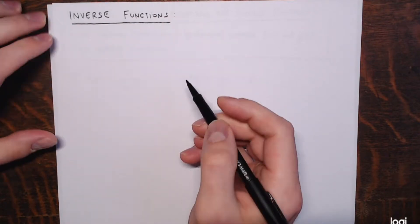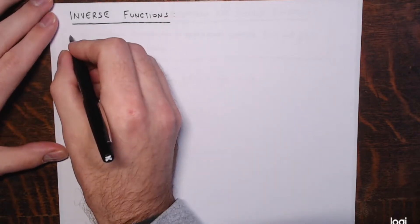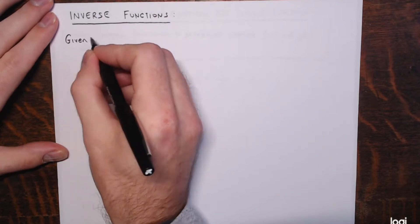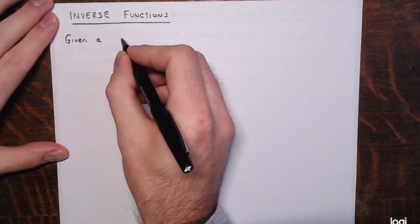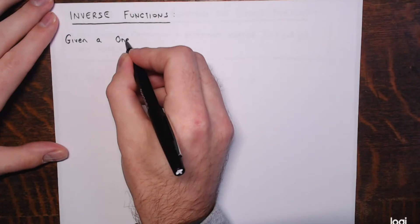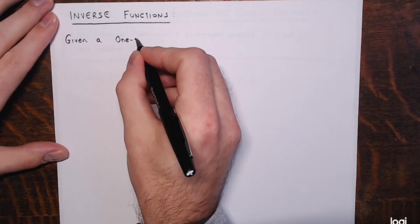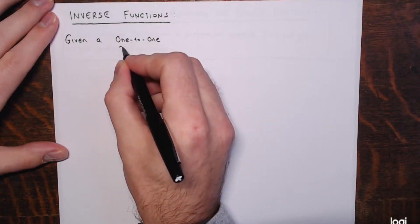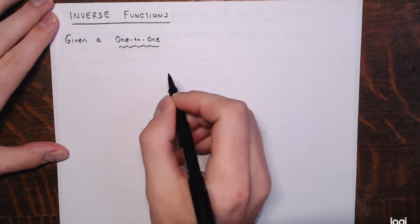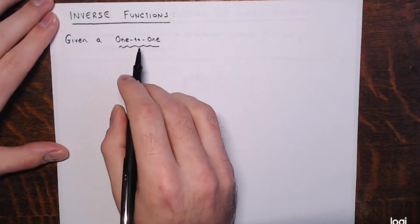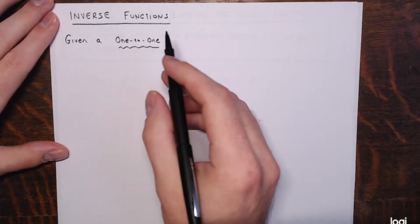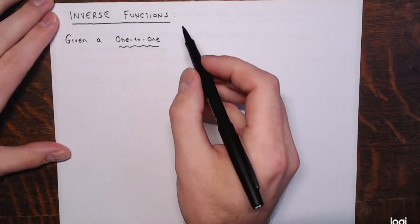Suppose we're given a one-to-one function. A function needs to be one-to-one in order to have an inverse — an inverse that is also a function.